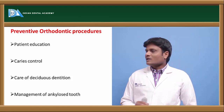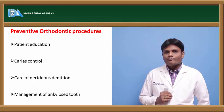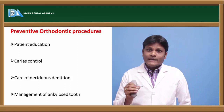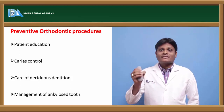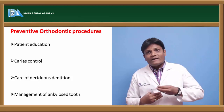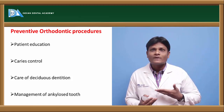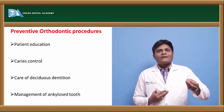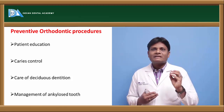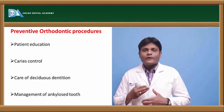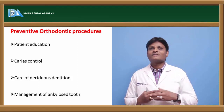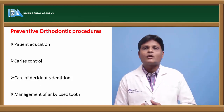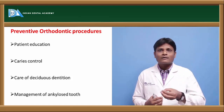The next important preventive orthodontic procedure is care of deciduous dentition. If caries lesions have occurred, they need to be addressed properly. But it is always better to preserve a natural tooth in its natural condition — that means preventing the occurrence of caries itself in the deciduous dentition. We need to use pit and fissure sealants and topical fluoride applications to reduce the risk of caries, thereby preserving the natural tooth structure.